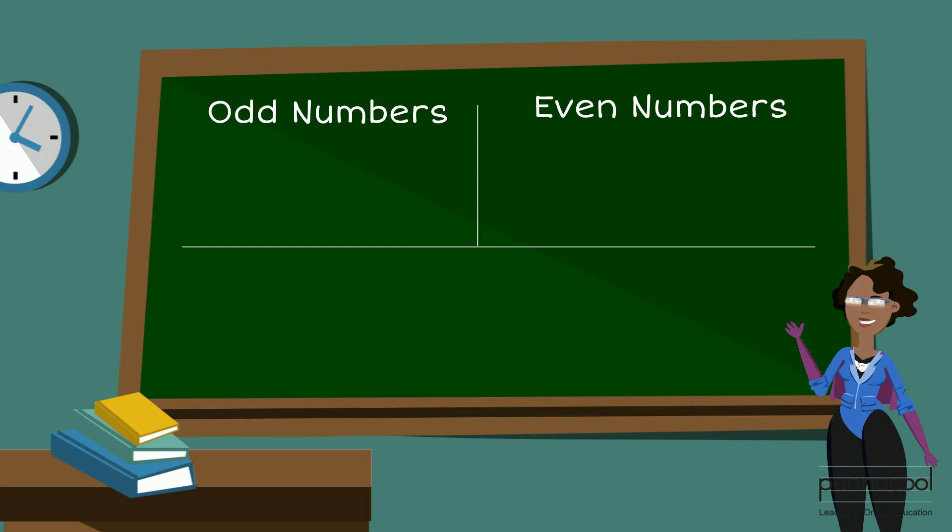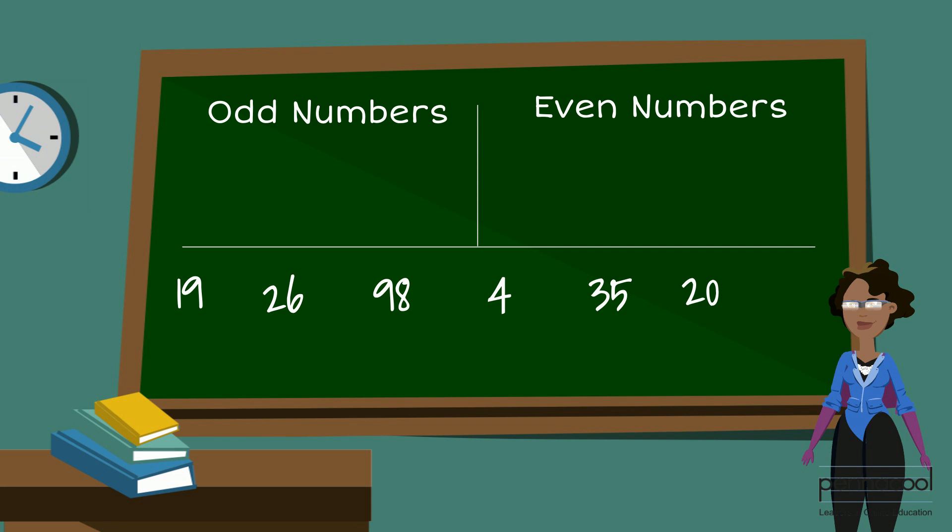Let's look at a few more examples and say whether the following numbers are odd or even. 19, 26, 98, 4, 35 and 20. Take a minute and decipher if these numbers are odd or even.